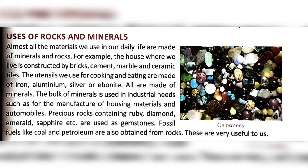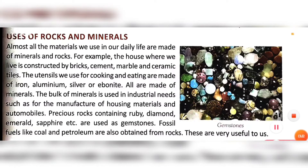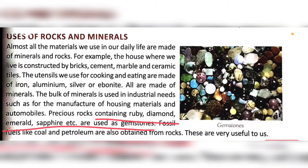The utensils which are made up of several metals like iron, aluminium, and copper are also used for industrial purposes - different minerals are used everywhere. Also, several precious jewelleries are made from precious rocks containing ruby, diamond, emerald, and sapphire. These are very precious gemstones from which several precious jewelleries are made.